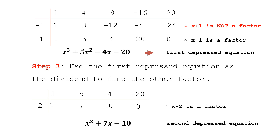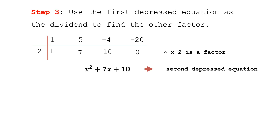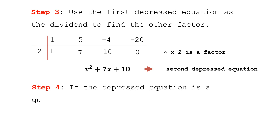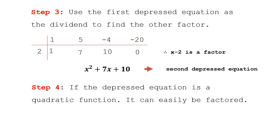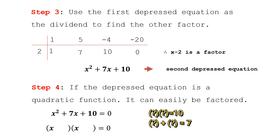We write the second depressed equation: x² plus 7x plus 10. The exponent is one less than the leading term of the first depressed equation. We use this second depressed equation to find the remaining factors. Step four: since it is quadratic, we factor x² plus 7x plus 10 by finding two numbers that multiply to 10 and add to positive 7.